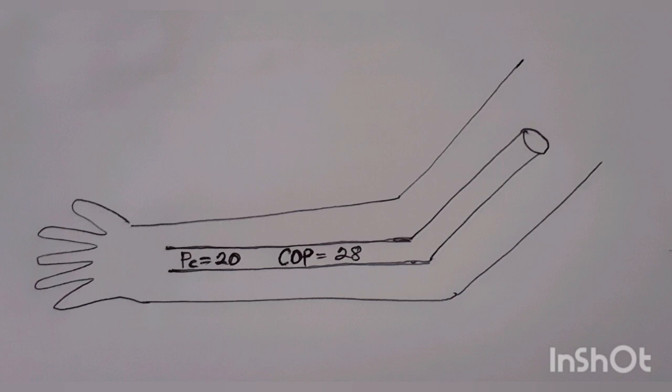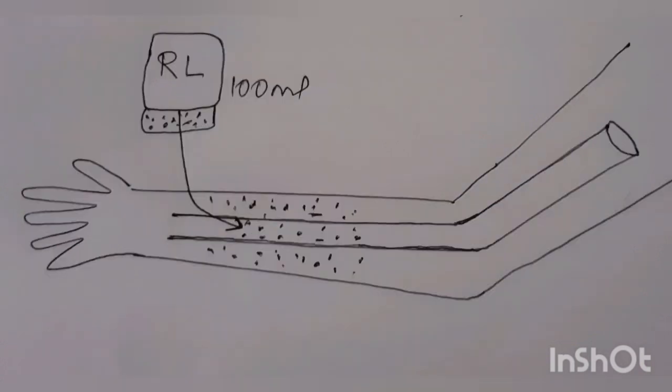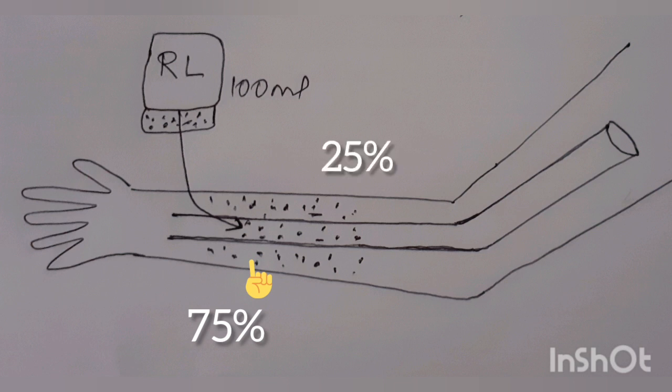When we look at intravenous fluids, the crystalloids like lactated Ringer's and normal saline have small molecules, so they can move easily from the plasma into the interstitium. In fact, 75% of the volume administered moves into the interstitium and only about 25% stays inside the vasculature.